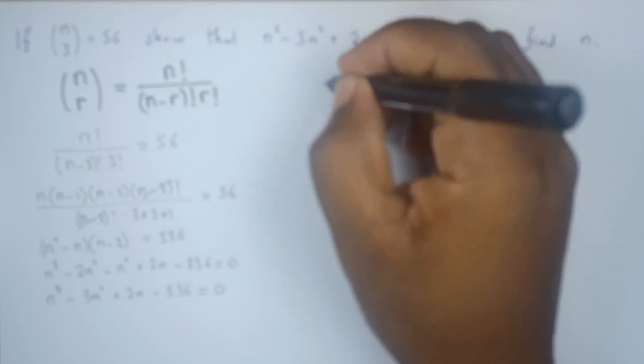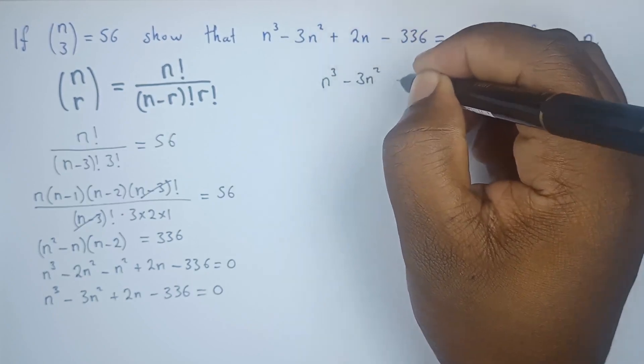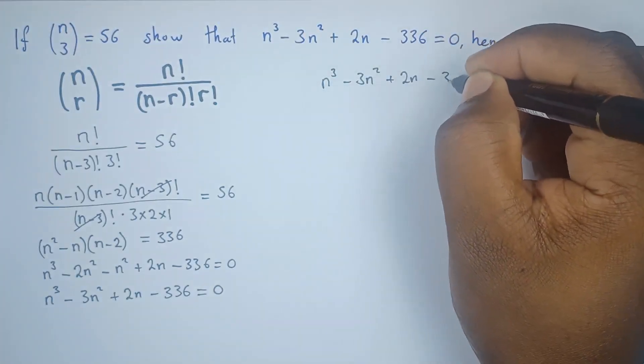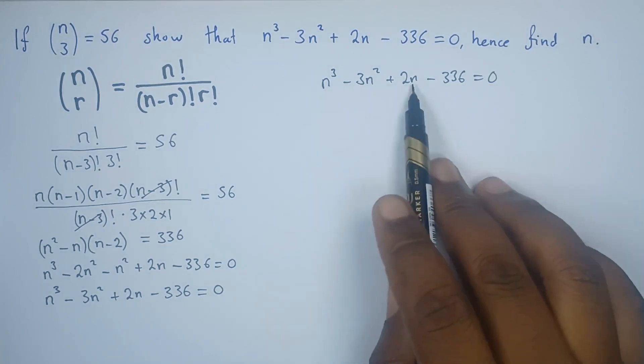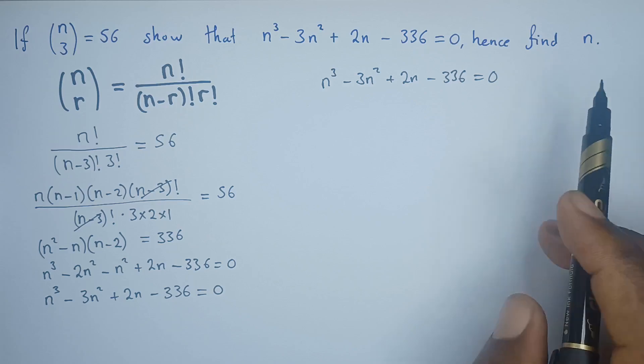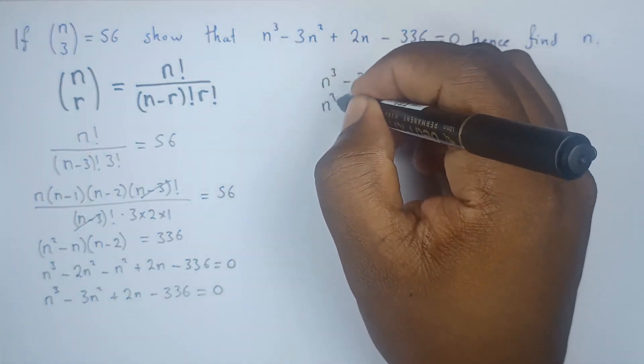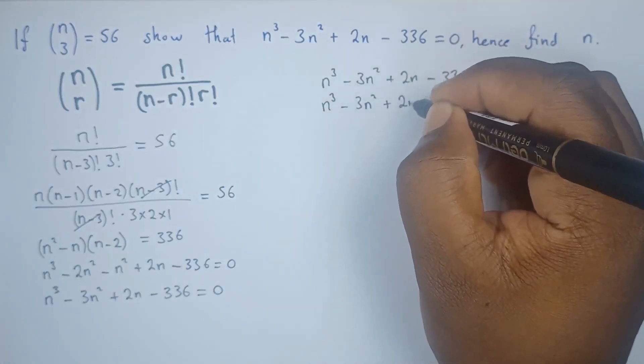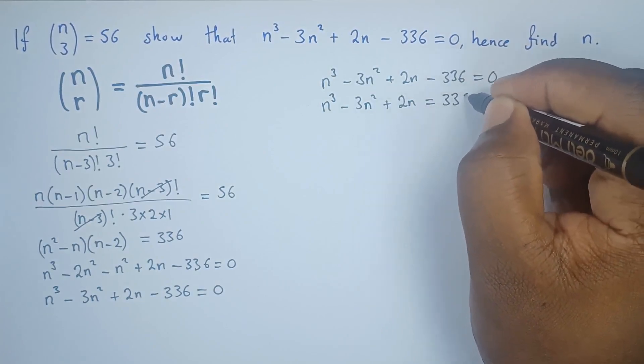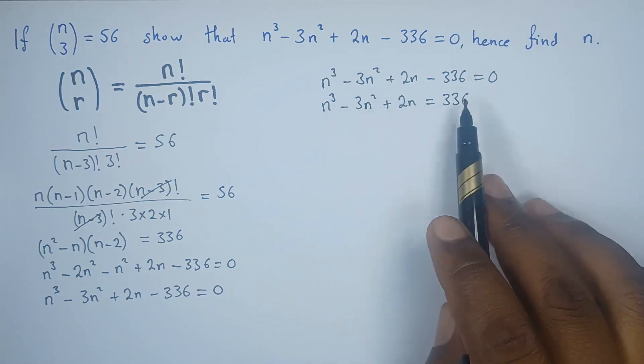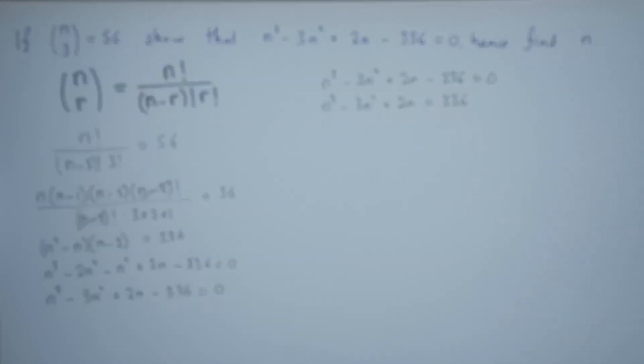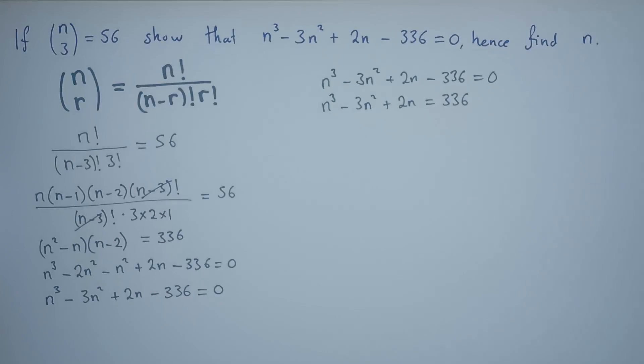Now our trial and error must be strategic. So we need to look for a value such that when we replace n with that particular value, it gives us 0. So in other words, let's rewrite this as n³ - 3n² + 2n equals 336. So we're looking for a value such that when we replace it here, it should give us 336. So by trial and error, we're supposed to start with ±1, then we move on to ±2, ±3, just like that.